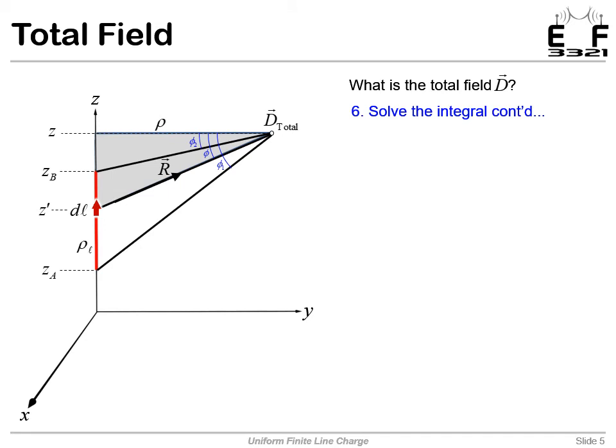We have a little bit more work to do. We have to think about this vector R. So what is R? Well, it has a component in the rho direction. That's distance off of Z axis. And we can see that that's just rho. It also has a Z component. And we can see that that's Z minus Z prime. So we now have an expression for R.